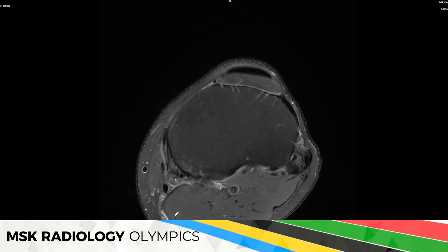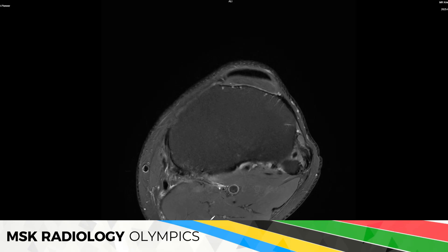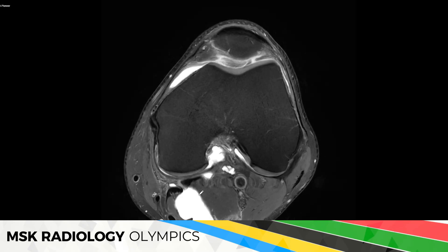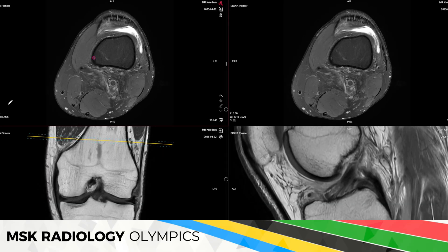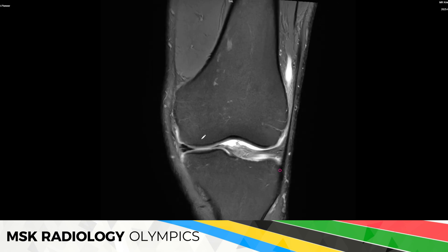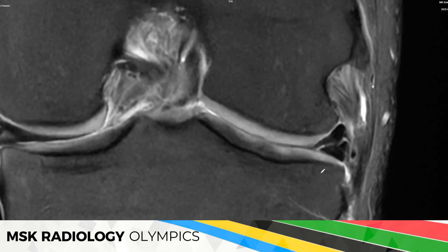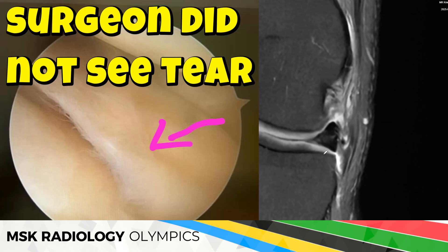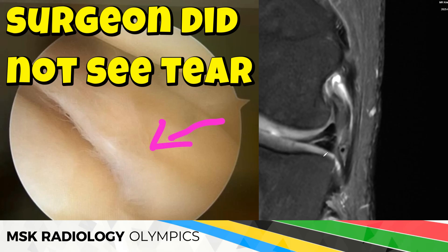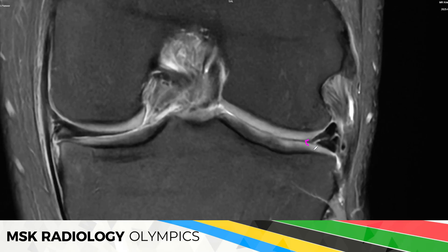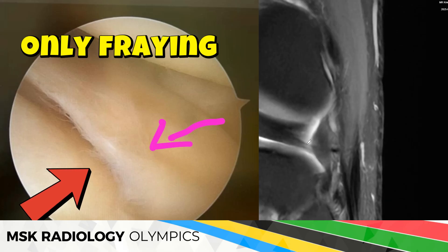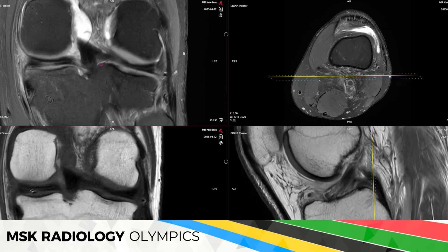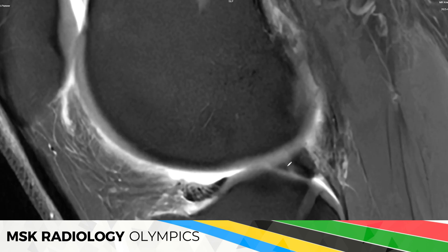We see a large Baker's cyst with some leakage or perifocal edema, and some focal edema in the medial gastrocnemius head suggesting a little myofascial strain of the muscle. The pes anserine tendons are otherwise okay — that's all on the medial side. Moving to the lateral side, the meniscus shows a signal change that seems to reach the undersurface. I would still count this as a horizontal tear, but intraoperatively it was not confirmed. There was some fraying of the free edge.